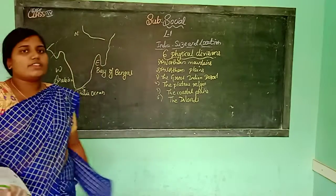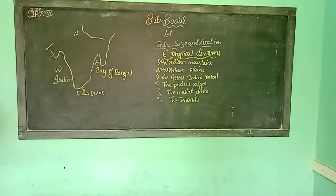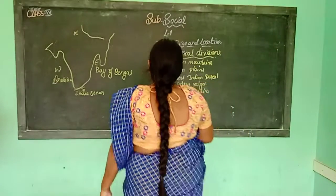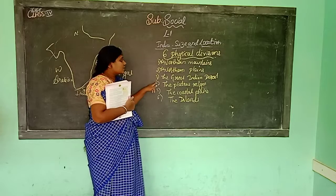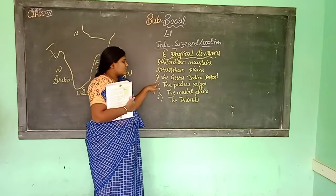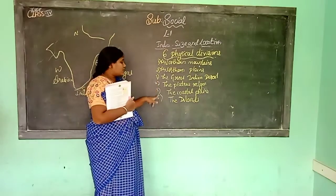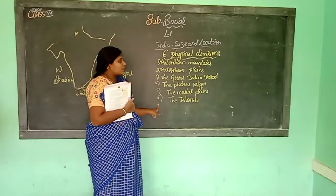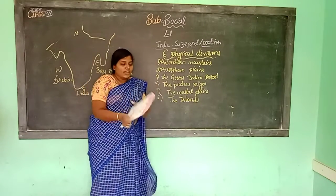There are six physical divisions of India. They are: the Northern Mountains, Northern Plains, Great Indian Desert, Plateau Region, Coastal Plains, and the Islands. These are the six physical divisions of India.